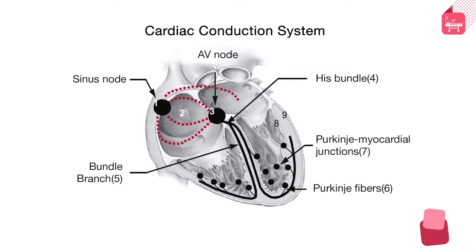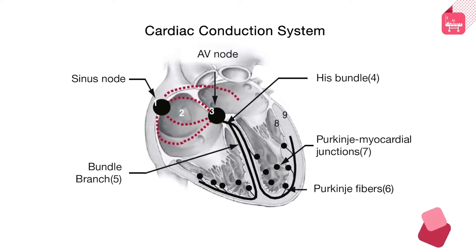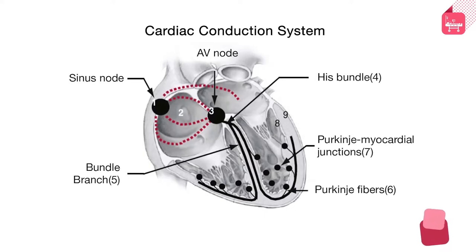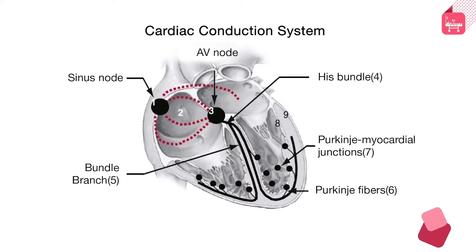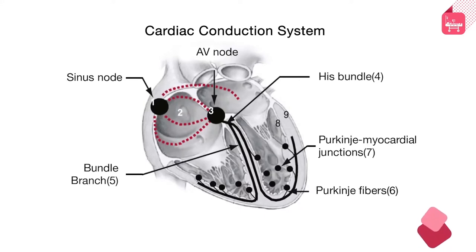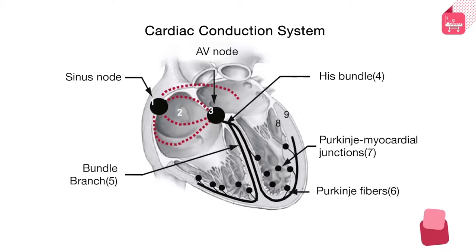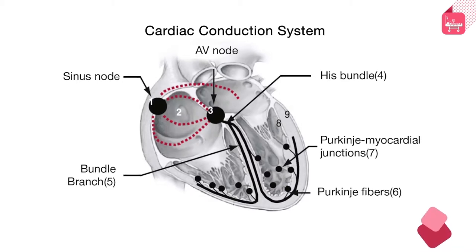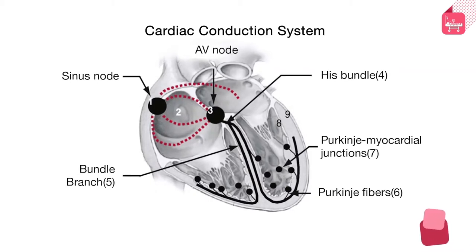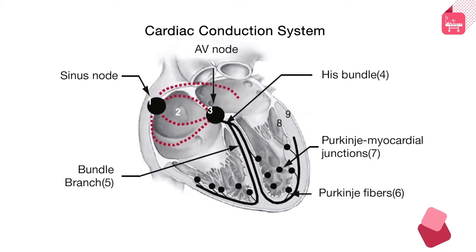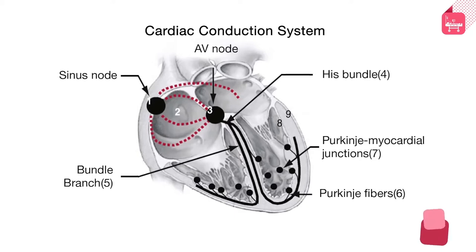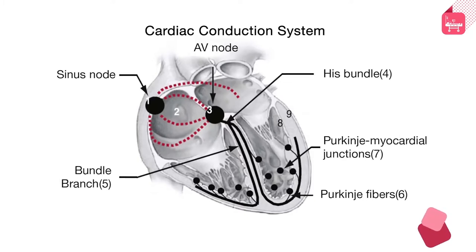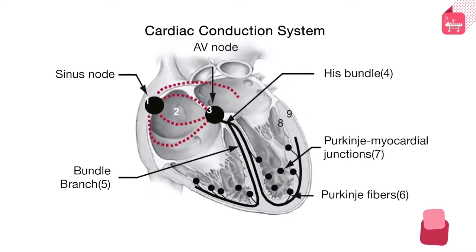The sinus node is the dominant pacemaker of the heart and is responsible for impulse origination. From the sinus node, impulses travel using specialized inter-atrial tracts and activate both the right and left atrium. From the atrium, the impulse goes down to the ventricles via the AV node, which acts as the gatekeeper of electrical impulses to the ventricle. From the AV node, the penetrating bundle of His originates, subsequently dividing into the right and left bundle branches, then distally ramifying into the Purkinje network, which activates all parts of both ventricles.